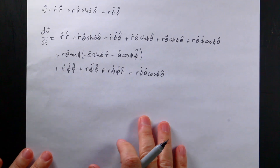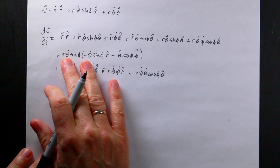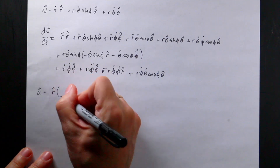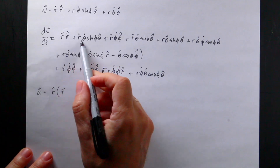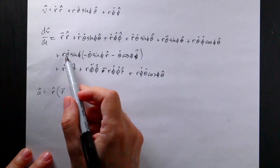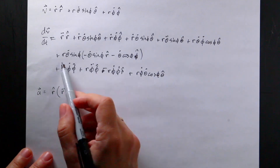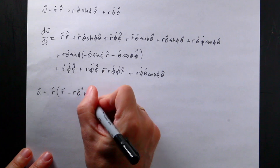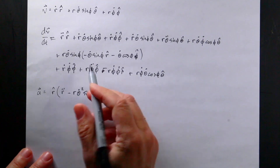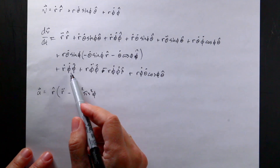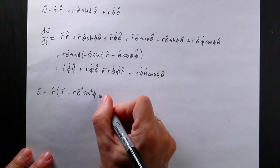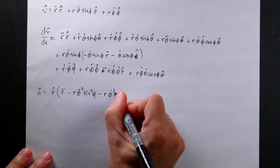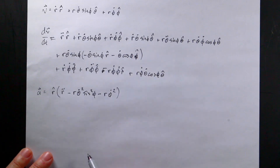Now I want to simplify by gathering all the r-hat terms together, all the theta-hat terms together, and the phi-hat terms together. Starting with r-hat: I get r-double-dot, minus r theta-dot-squared sine-squared phi — because I had that r-theta-dot sine phi multiplied by theta-dot sine phi from the derivative of theta-hat — and minus r phi-dot-squared. So those are all my r-hat terms.